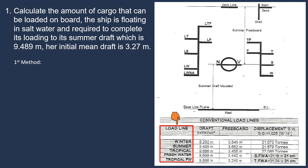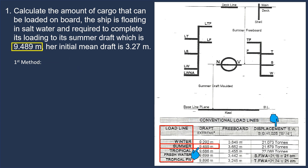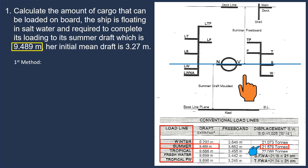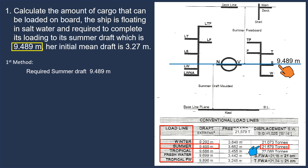In the first column you can see 'summer.' Along this row, in the second column, we have the corresponding value of 9.489 m — this is her summer draft as given in this problem. In the last column of the same row, we can find her corresponding summer displacement of 21,579 tons. We are required to load until the waterline is on top of the S load line mark, which corresponds to her summer draft of 9.489 m. This is the maximum draft the ship can load when floating in salt water, corresponding to her summer displacement of 21,579 tons.